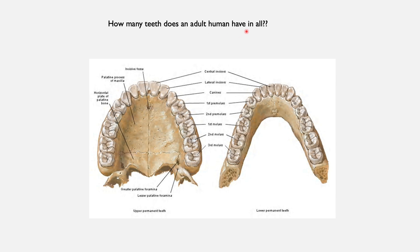How many teeth does an adult human have in all? This is a question somebody was asked at a medical school interview and the person said 42 — please note that is incorrect. This is the upper jaw — the maxilla with the teeth — and that is the lower jaw, the mandible, also with teeth. We should be able to tell the type of teeth and where they are positioned: the central incisor at the front, then the lateral incisor, the canine, the first premolar, second premolar, then first molar, second molar, and third molar.